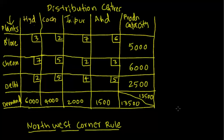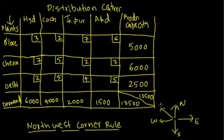If I draw a map here — this is north, this is south, this is east, this is west — this happens to be the northwest corner of the map. So in this matrix, this is the northwest corner-most cell. Whatever number of units can be met from Bangalore plant to Hyderabad distribution center, just meet the demand by sending as many units as possible.